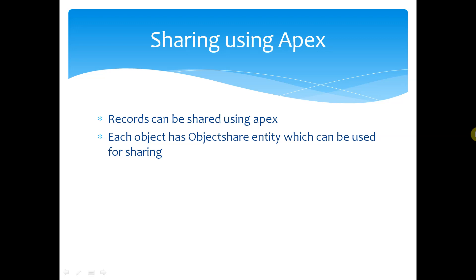If you remember, in the admin and Apex tutorial, we had created organization-wide defaults — private, public-read-only — and if the lead is private or case is private, and you have a role hierarchy, peers cannot see the record. So you can share it using criteria-based rules.